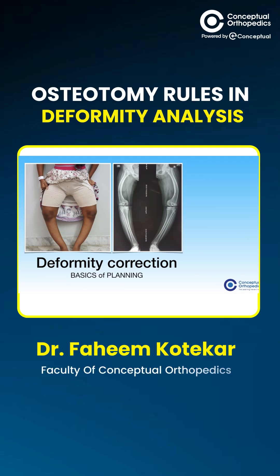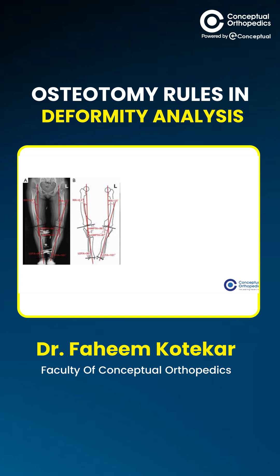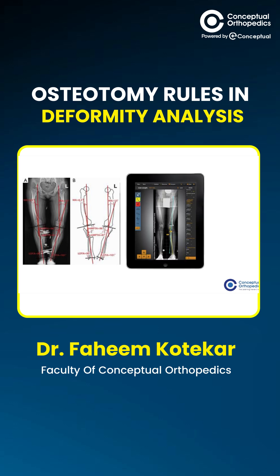Deformity correction planning. Deformities are planned on full-length standing radiographs with the patella facing forward. Traditionally, they are planned on paper tracings of these radiographs, which are then analyzed, planned, and cut out to correct the different deformities. More recently, technology has advanced and deformity planning can also be done on apps. However, for the purpose of this lecture we will learn it the traditional way.